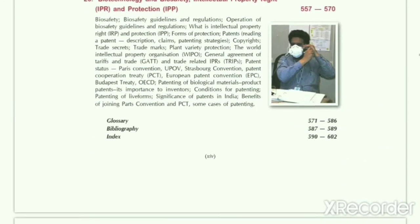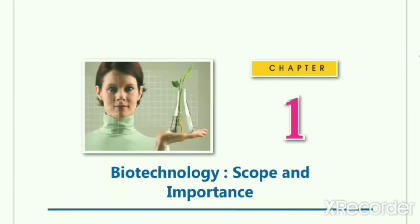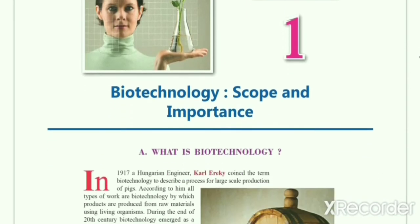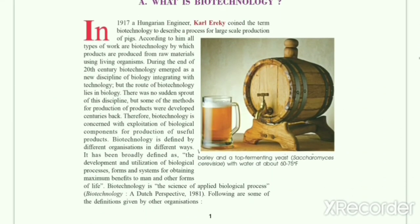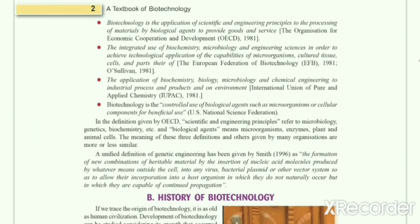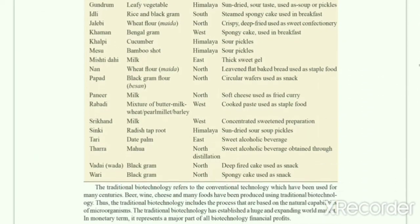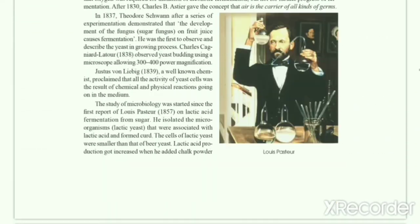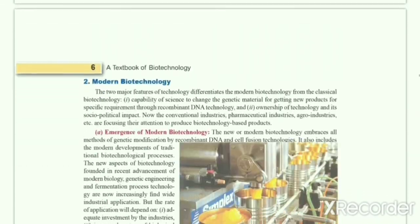Gene Concept: Units of Gene — Cistron, Recon, Muton. Split Genes, Introns, RNA Splicing, Ribozyme, Evolution of Split Genes, Overlapping Genes, Gene Organization. Gene Expression and Gene Regulation: Transcription, The LAC Operon — Structural Gene, Operator Gene, Promoter Gene, and Repressor Gene. Artificial Synthesis of Genes: Synthesis of a Gene for Yeast Alanine tRNA.